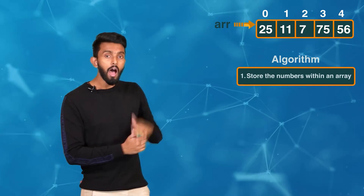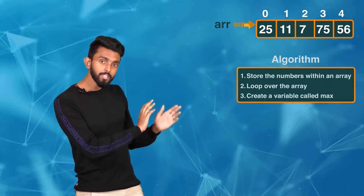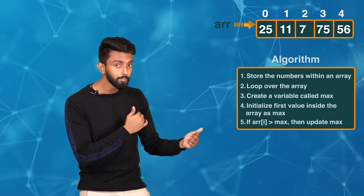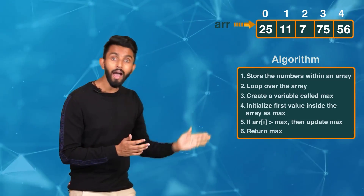Let me give you a simple difference between a human being and a computer. I have five numbers in front of me — you can quickly tell which is the largest because of the way your human brain works. You just ran your eyes from left to right and found it. But a computer requires a step-by-step procedure — an algorithm. In Java, I would store the five numbers in an array, loop over it, create a variable called max, initialize it with the first value, and update max whenever I find a larger number, then return max.